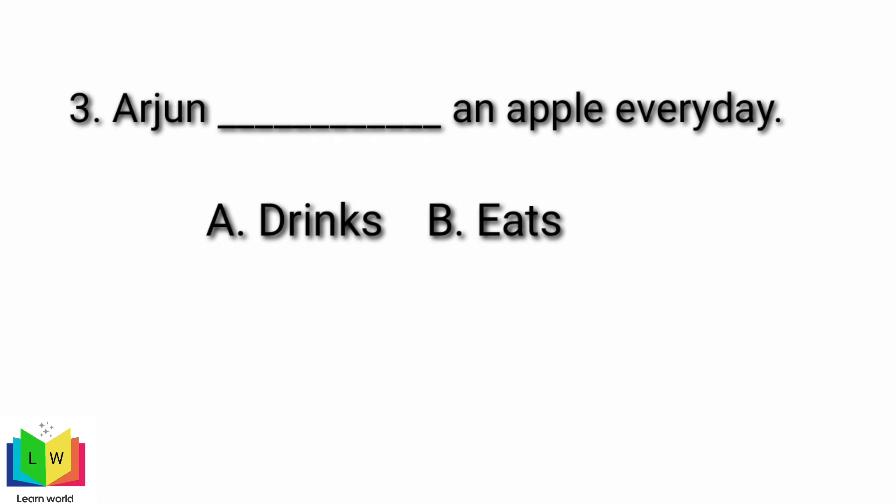Now let's try a question. 'Arjun ___ an apple every day.' Which of the following verbs is correct? Option A: drinks. Option B: eats. The correct answer is 'eats.'